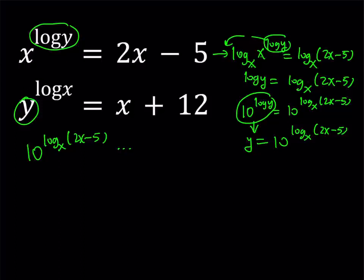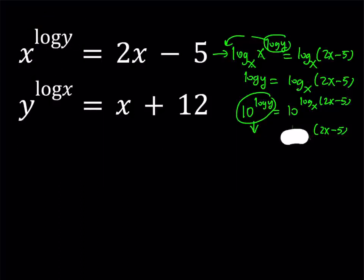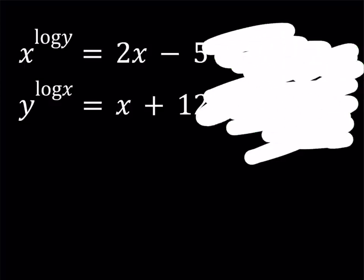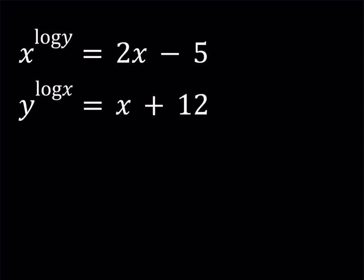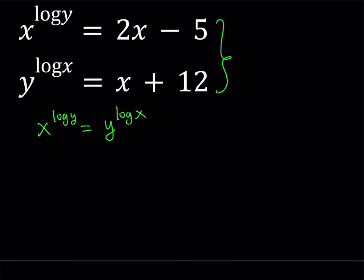We're going to solve this using some magic powers. It depends on one basic identity, and I'm going to present the identity and then prove it. The identity is that x to the power log y is equal to y to the power log x. You might be surprised if you haven't seen this before. I'm going to show you why this works — it's something you can always use. Let's go ahead and prove it first.